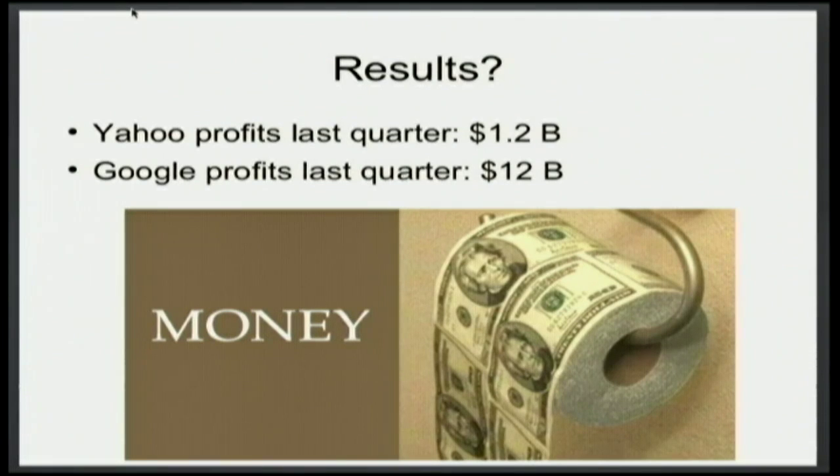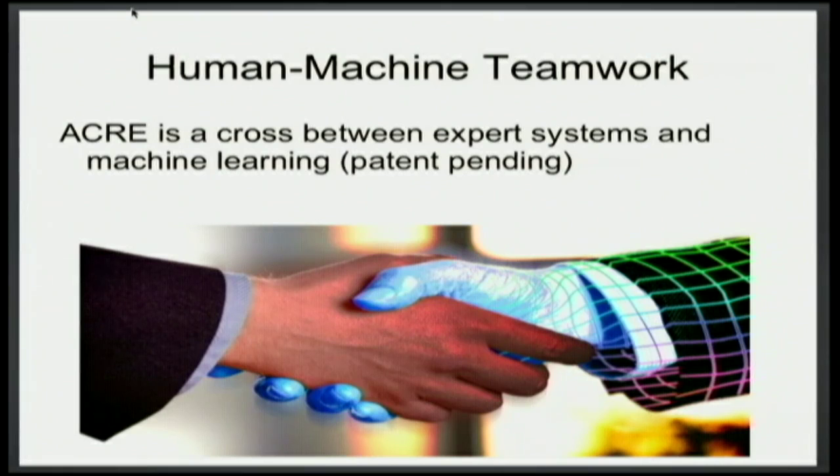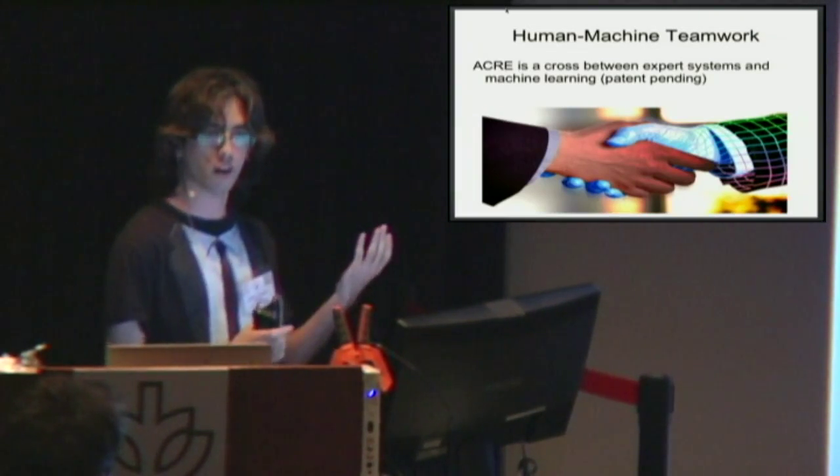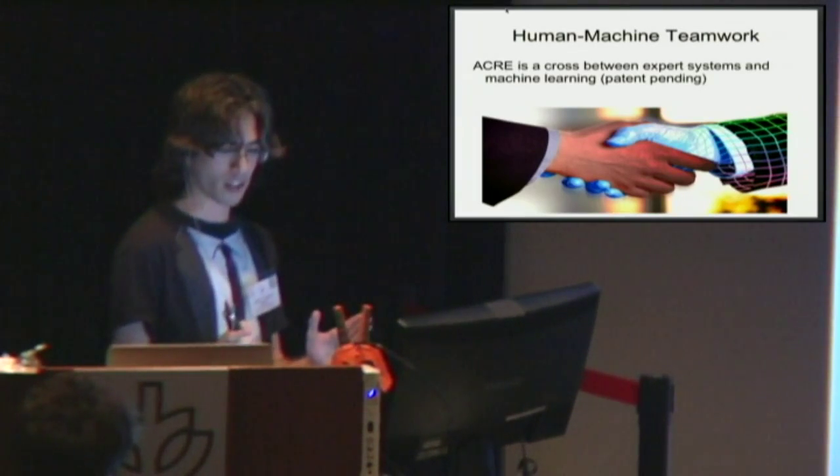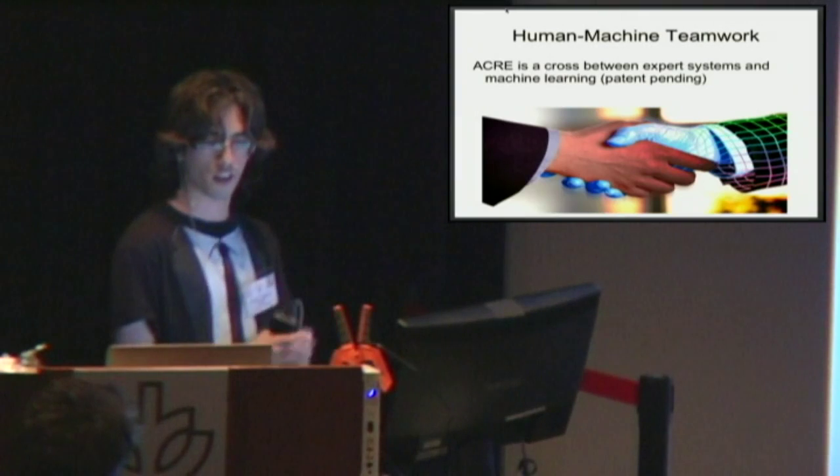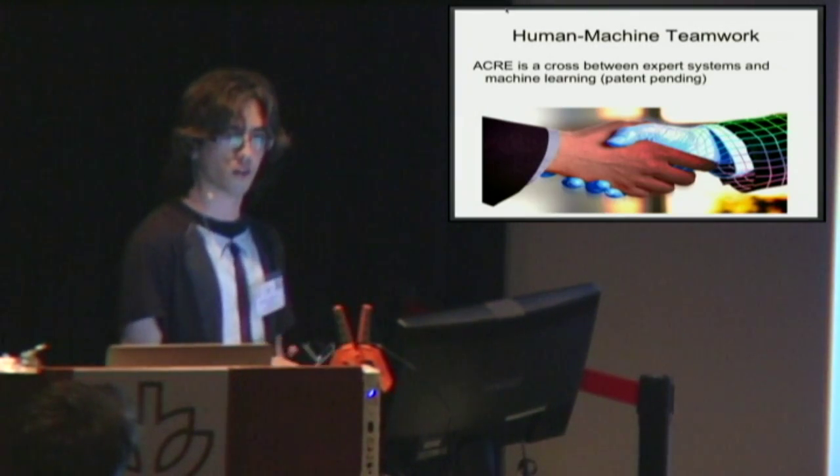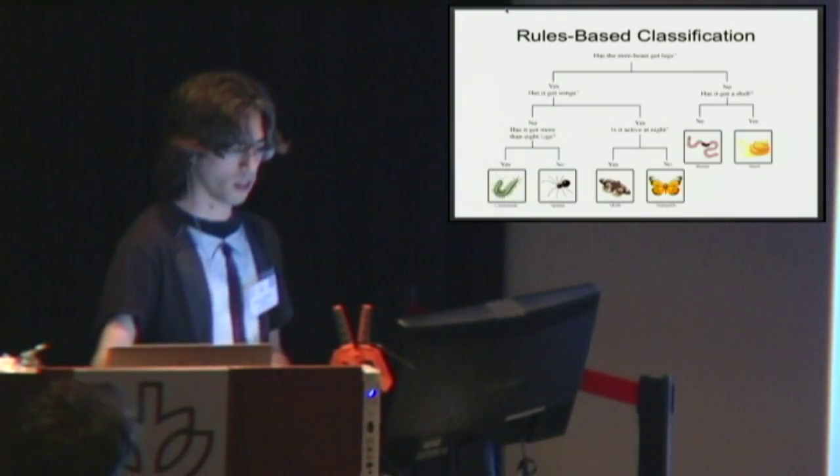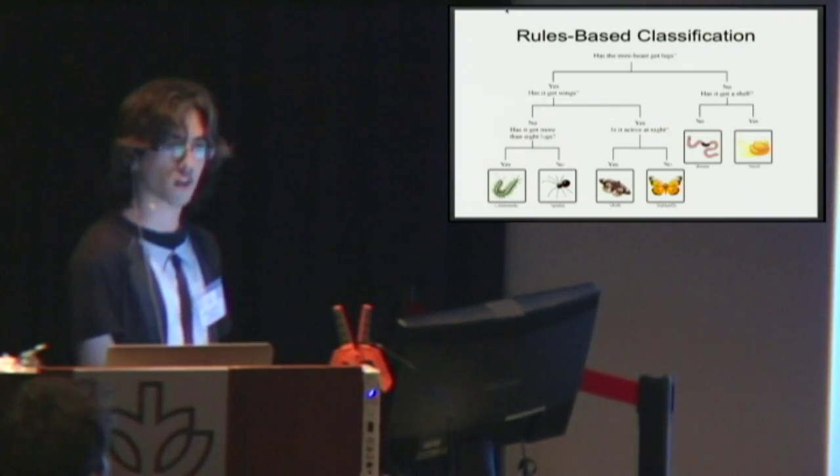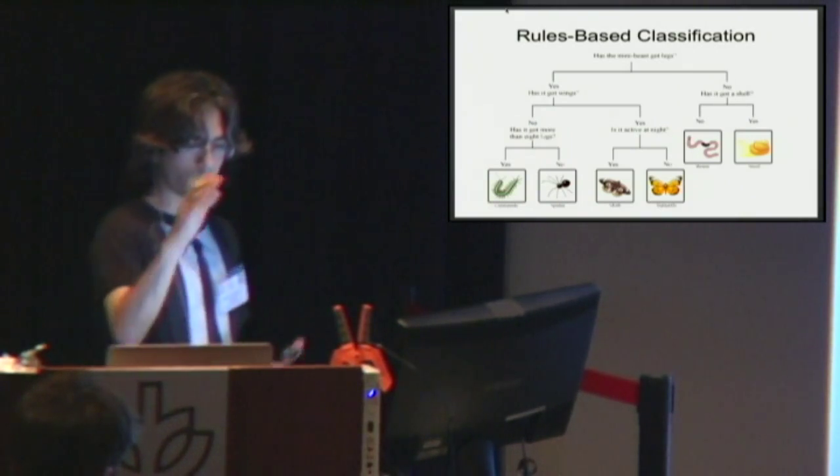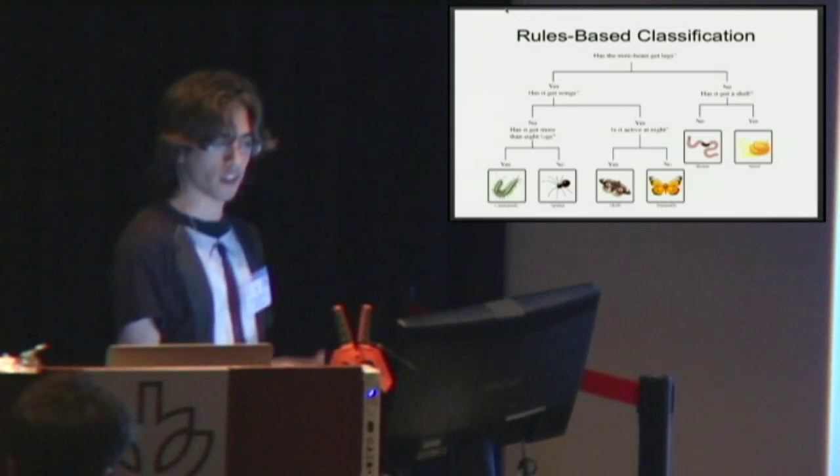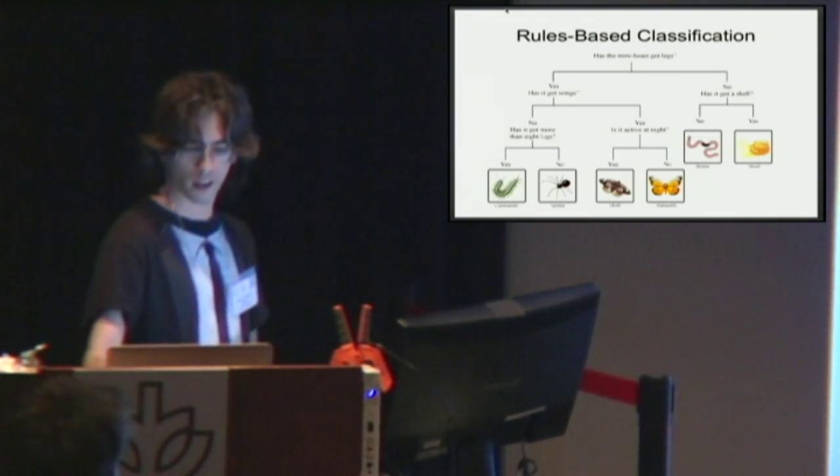We would like to be the Google of text analytics. Our approach for that is having human-machine teamwork. We have expert systems and machine learning combined. A lot of these software focus more on data scientists, but we actually, our target user are just experts in the field. So if you're a legal expert, you can actually help program the system to make it work better for you. One way you can do that is rules-based classification. You define a set of rules that will actually definitively classify based on if the rules are matched. And then if no rules match, that's when it falls back on the machine learning algorithm.